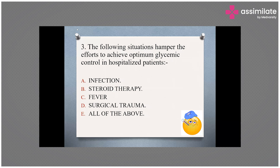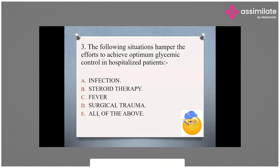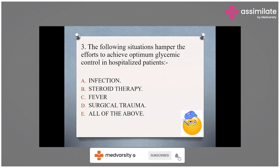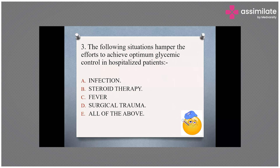In all these conditions, blood sugar levels can become uncontrolled and glycemic targets may not be achieved. Additionally, if a patient is on any immunosuppressive medications or started on enteral or parenteral nutrition, optimum glycemic targets may not be achieved. These are the key factors that can affect glycemic targets.